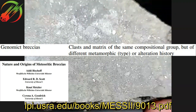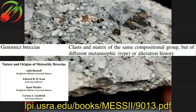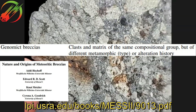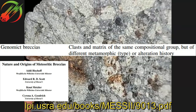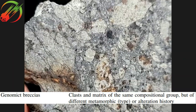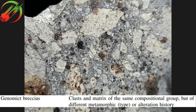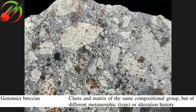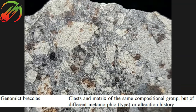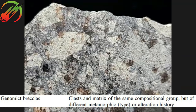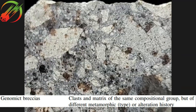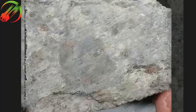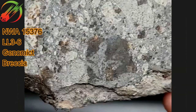They give a definition for genomic breccias as clasts and matrix of the same compositional group but of different metamorphic type or alteration history — so it's the same type of meteorite, just metamorphosed to different degrees in different parts.